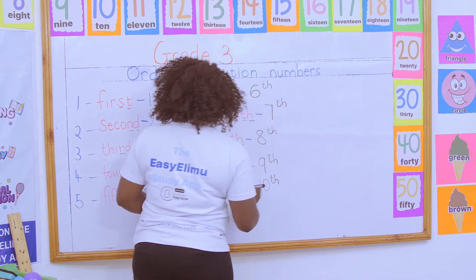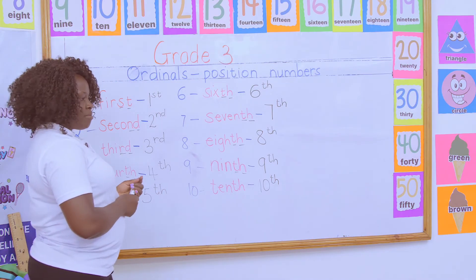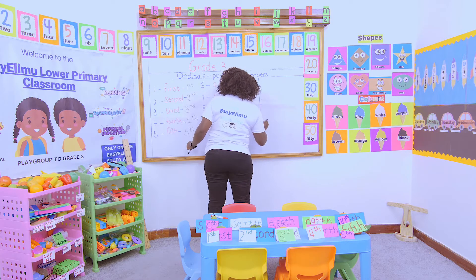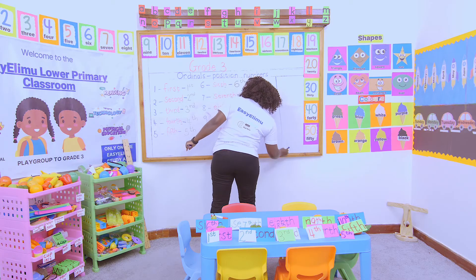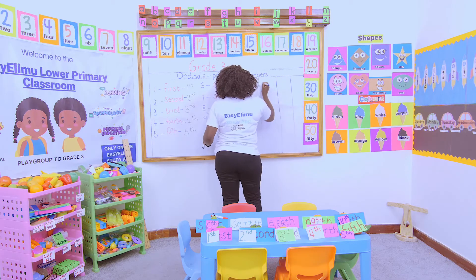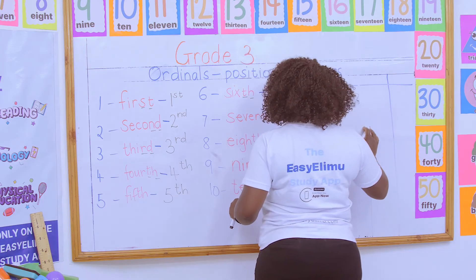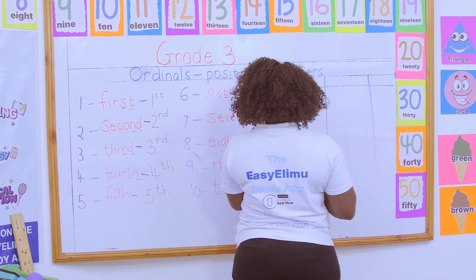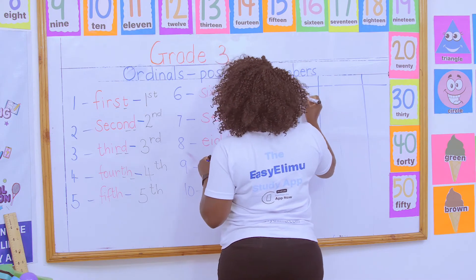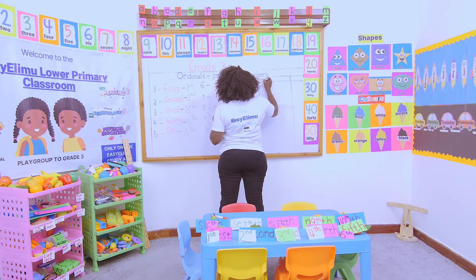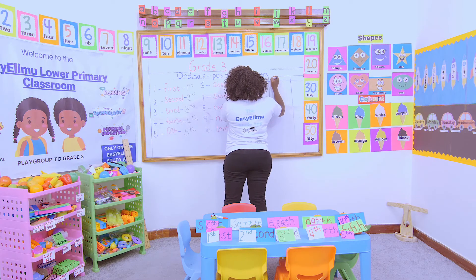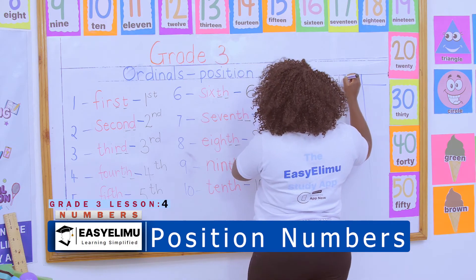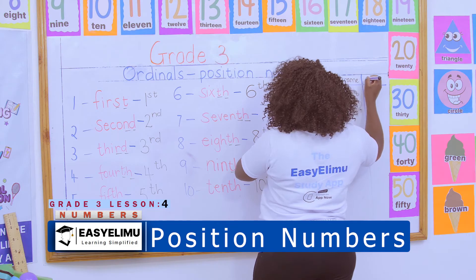Are we together? Now, up to there, is there any problem? There is no problem. So when you go home during your own free time, I want us to fill this table. This table has the number, it has the word, and here is the ordinal name and here is the symbol.